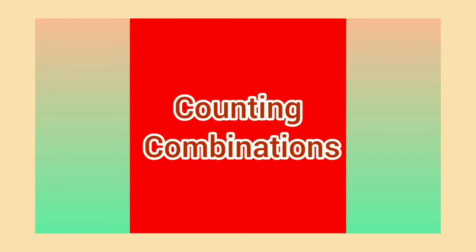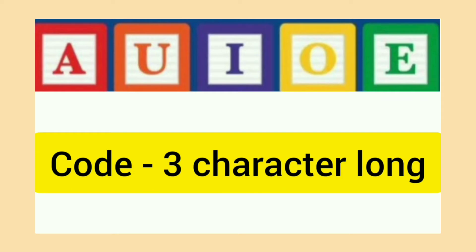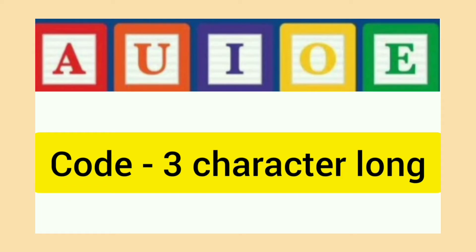Consider someone has given you a code and you have to guess it. You will try to crack that code by guessing the first letter or number, then second, and then third. Let us consider one example. There is a code which is three characters long. The code is made up of vowels. Second, repetition of the vowels in the code is allowed.